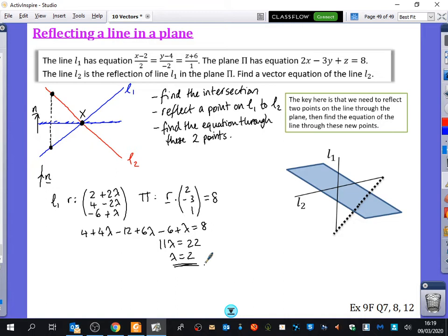If λ equals 2, the point of intersection X will be substituting λ = 2 in here. So I get 2 + 2(2), 4 - 2(2), and -6 + 2. That's (6, 0, -4). It feels helpful to come back and say this intersection point is (6, 0, -4) on the diagram.